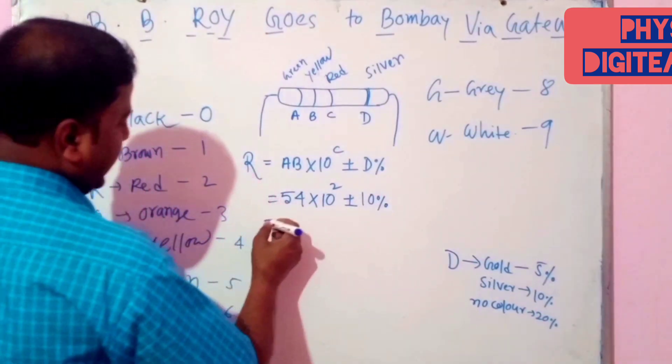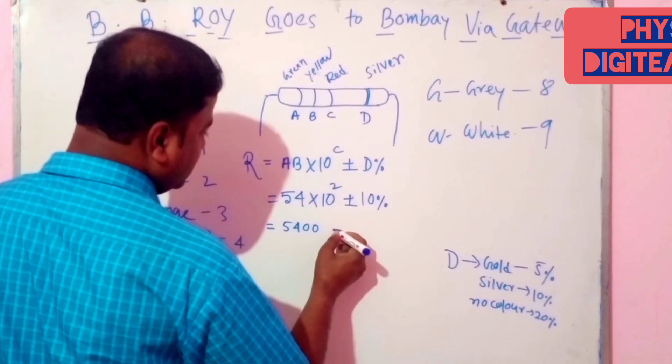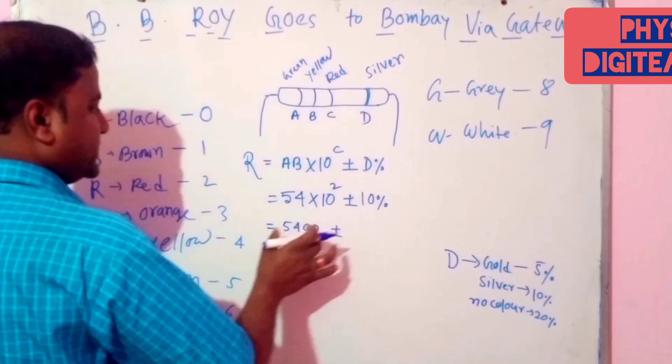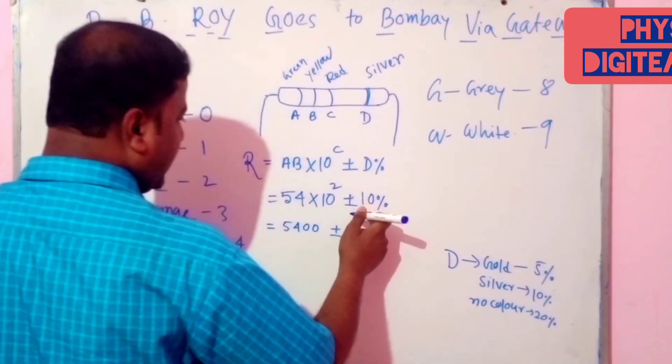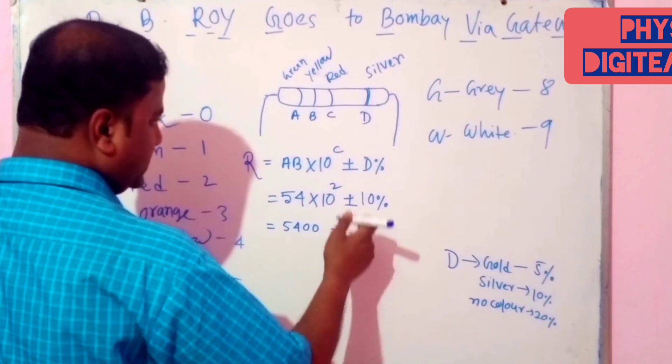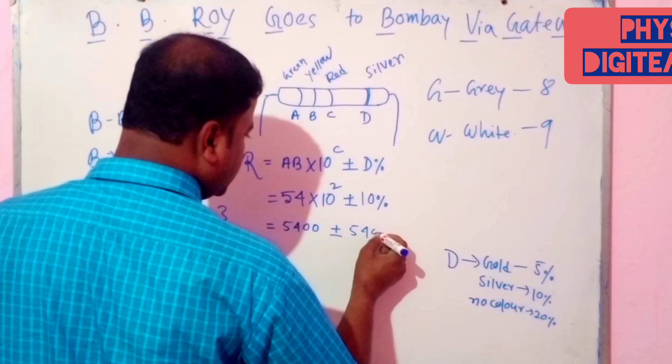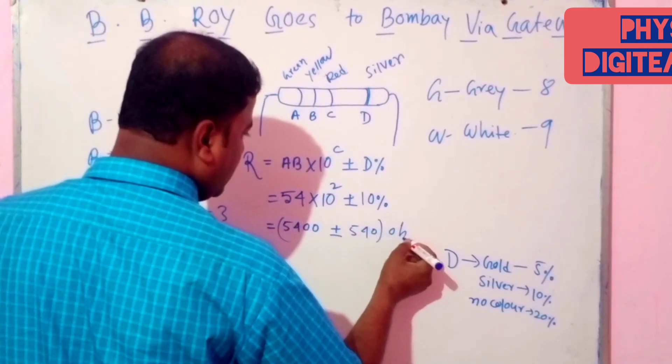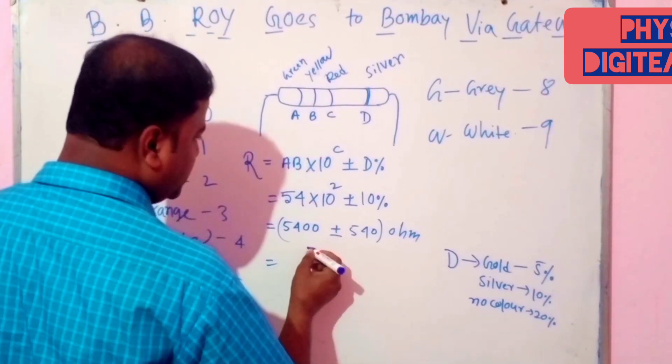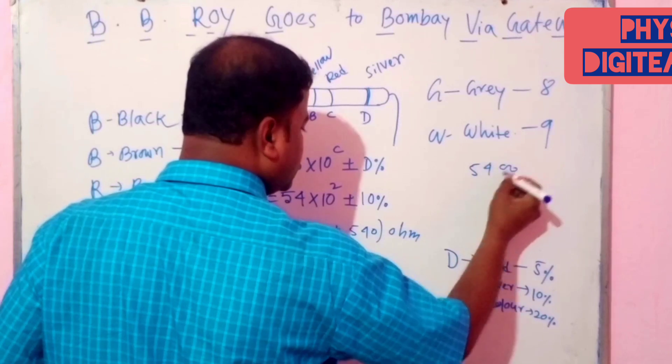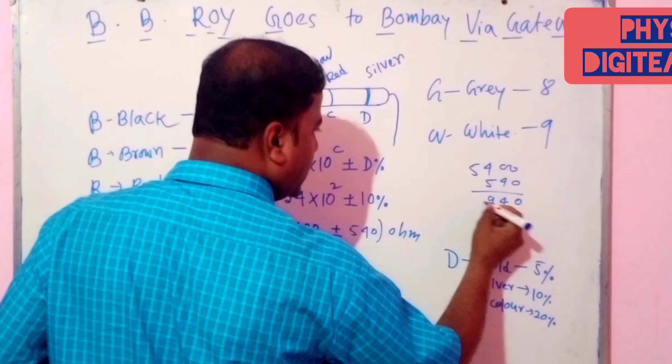Then, we get, here, the value, 5400 plus minus 10% of this value. And this is, we know, 10 by 100, that is 1 by 10, and this gives 540. 5400 and 540, then 0495. One value is 5940.